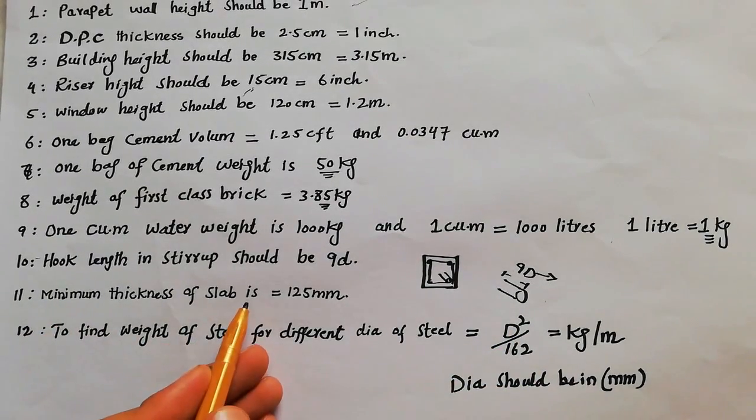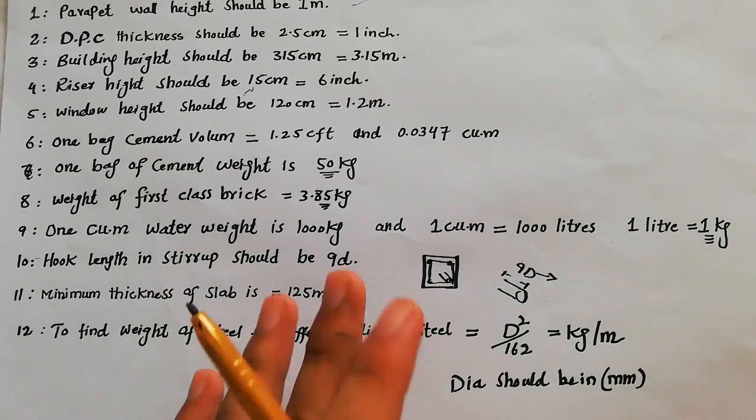Minimum thickness of the slab is 125 mm minimum.